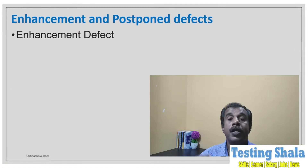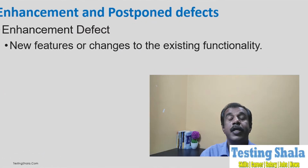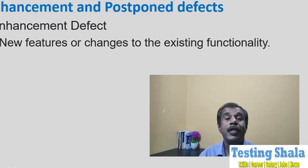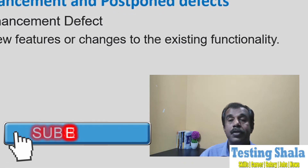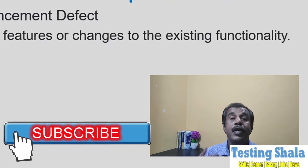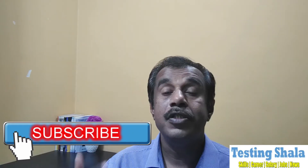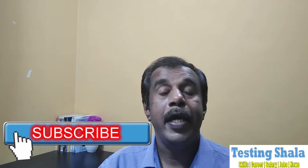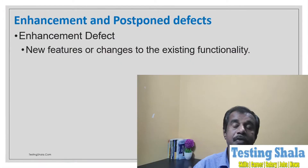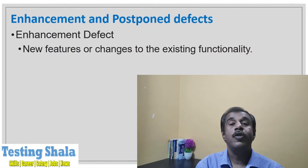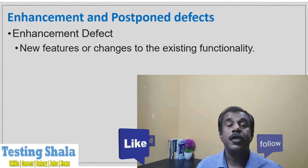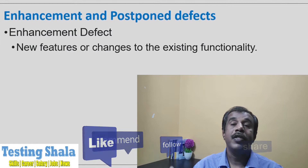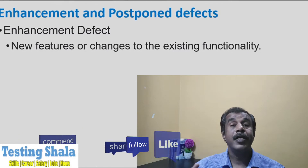Firstly, the enhancement defect. During execution we find a certain issue, but that issue is not as per the requirement — it is more of a change request. It is a good feature required to be implemented. Everybody agrees it is a defect, but that feature is not at all there in the system, so we consider it as an enhancement defect or a change request.